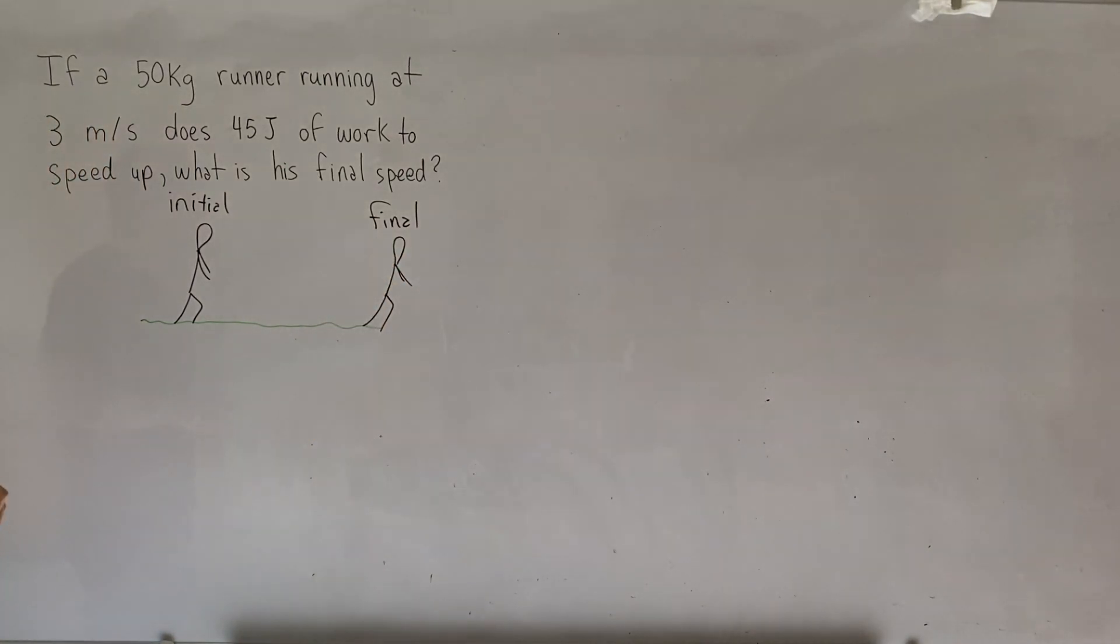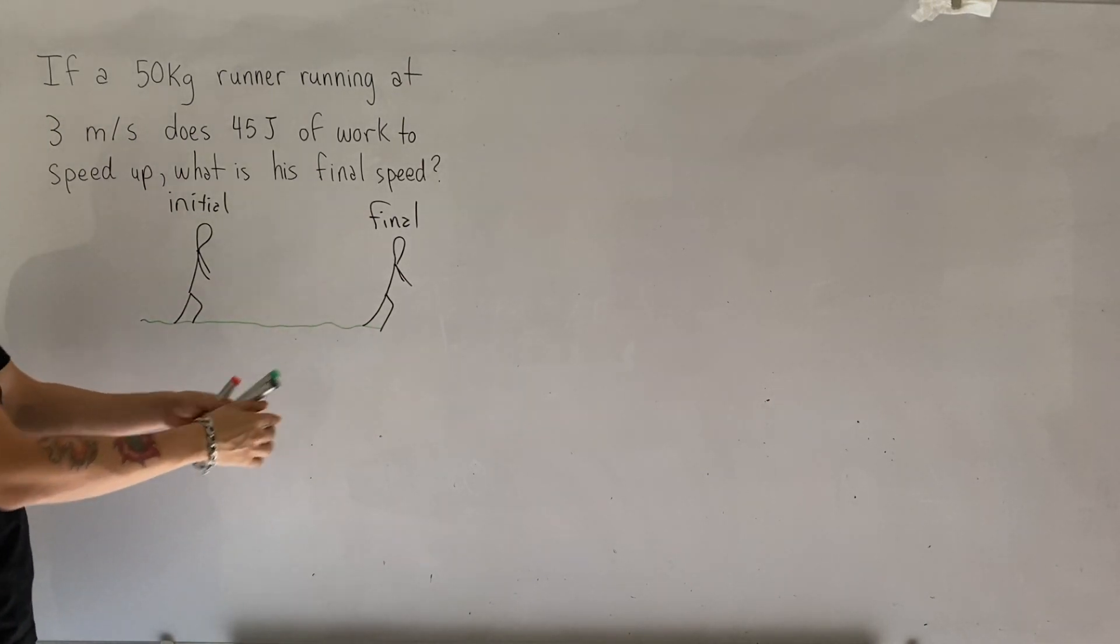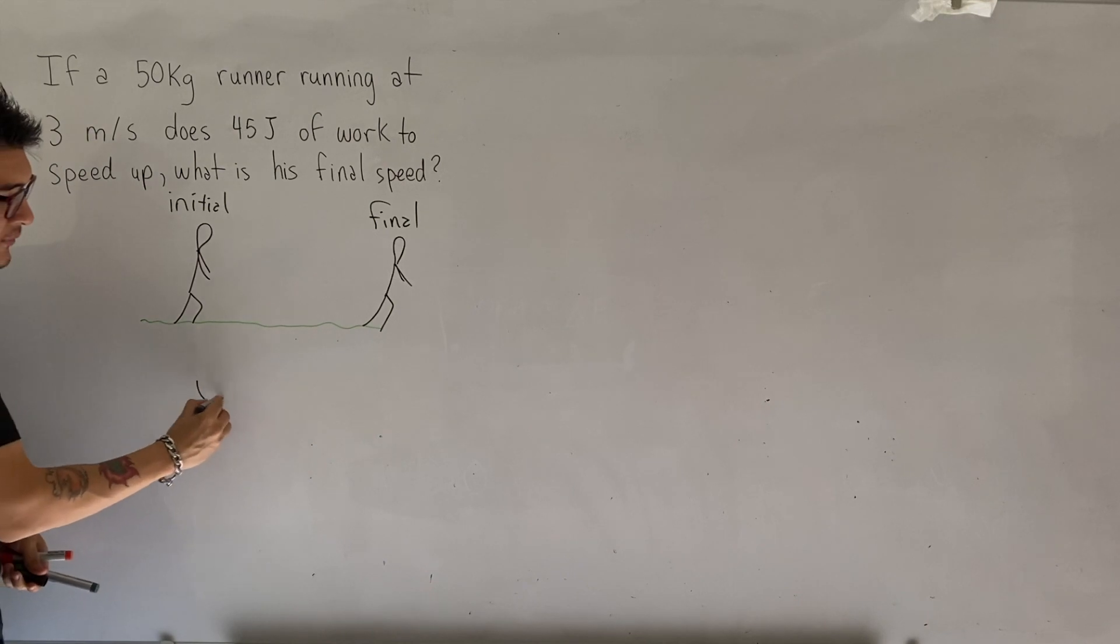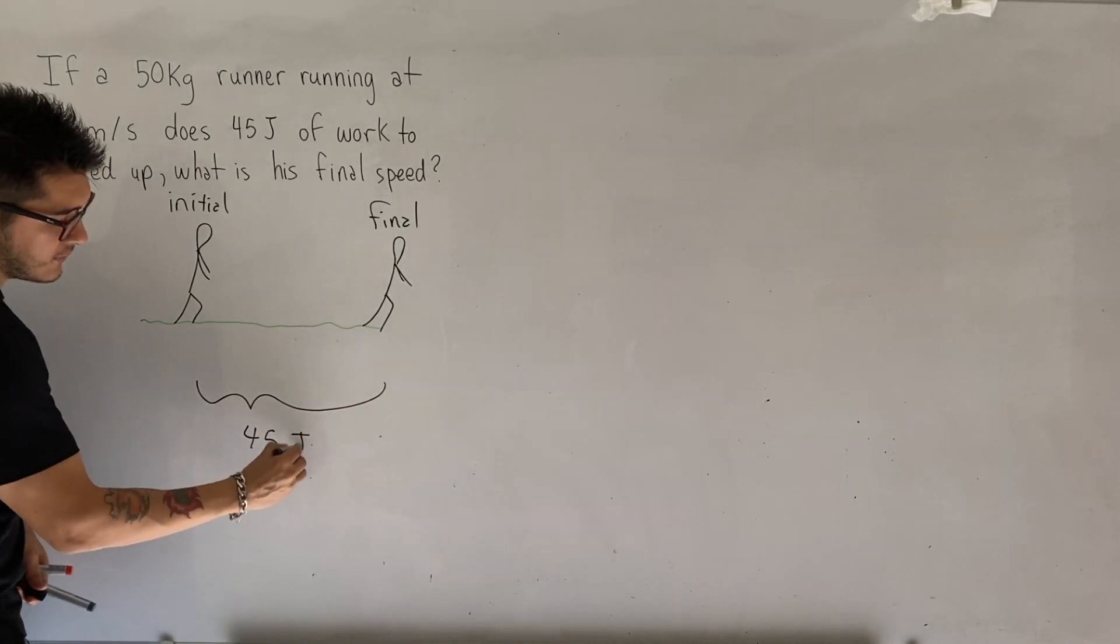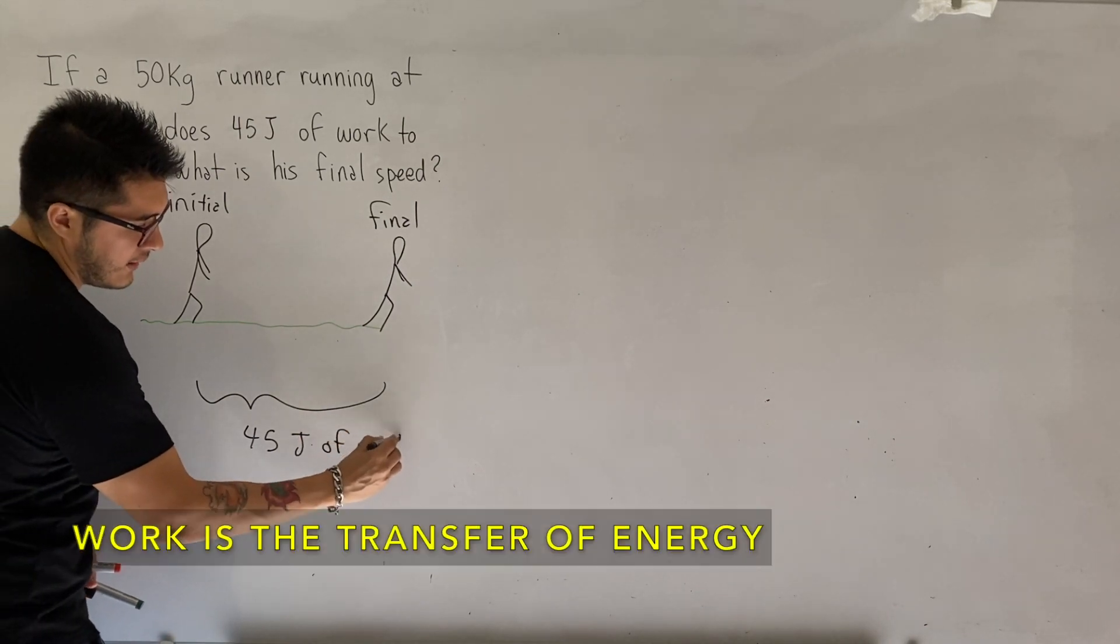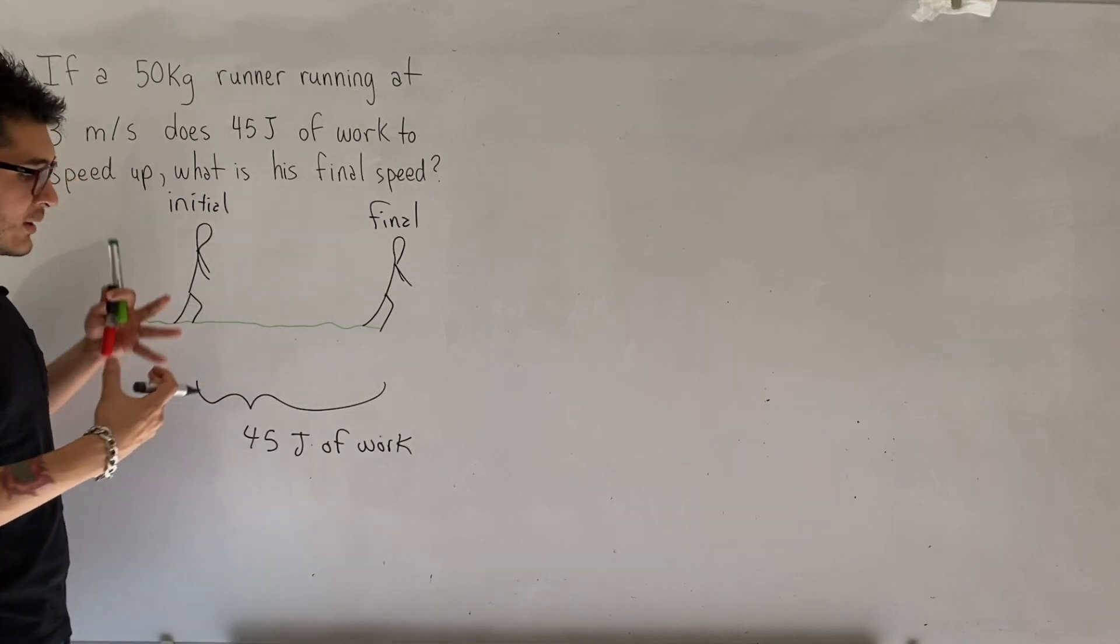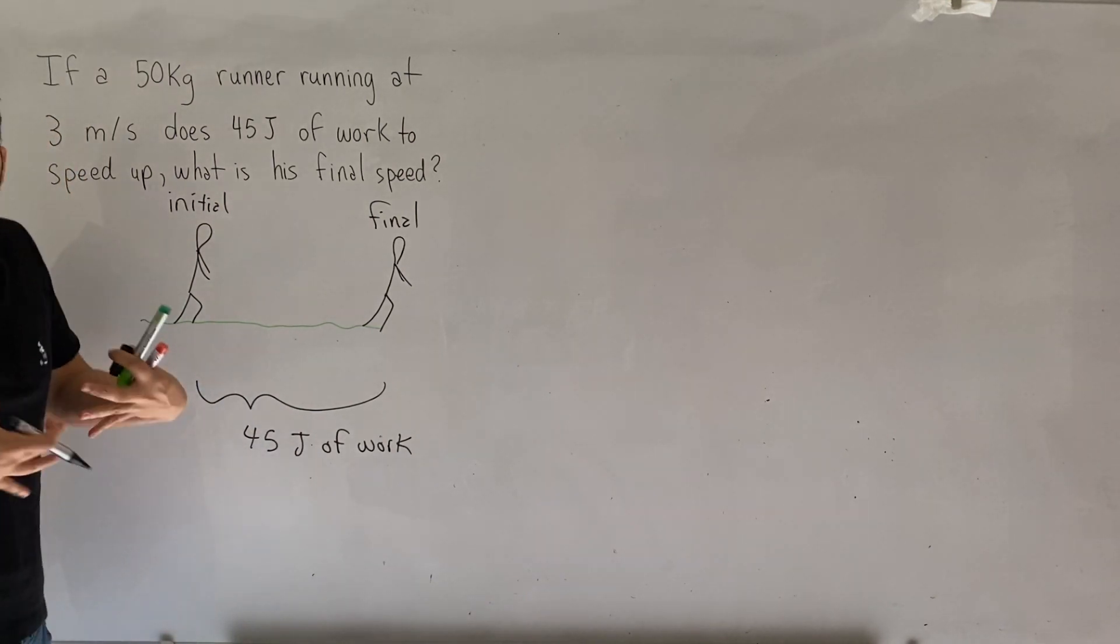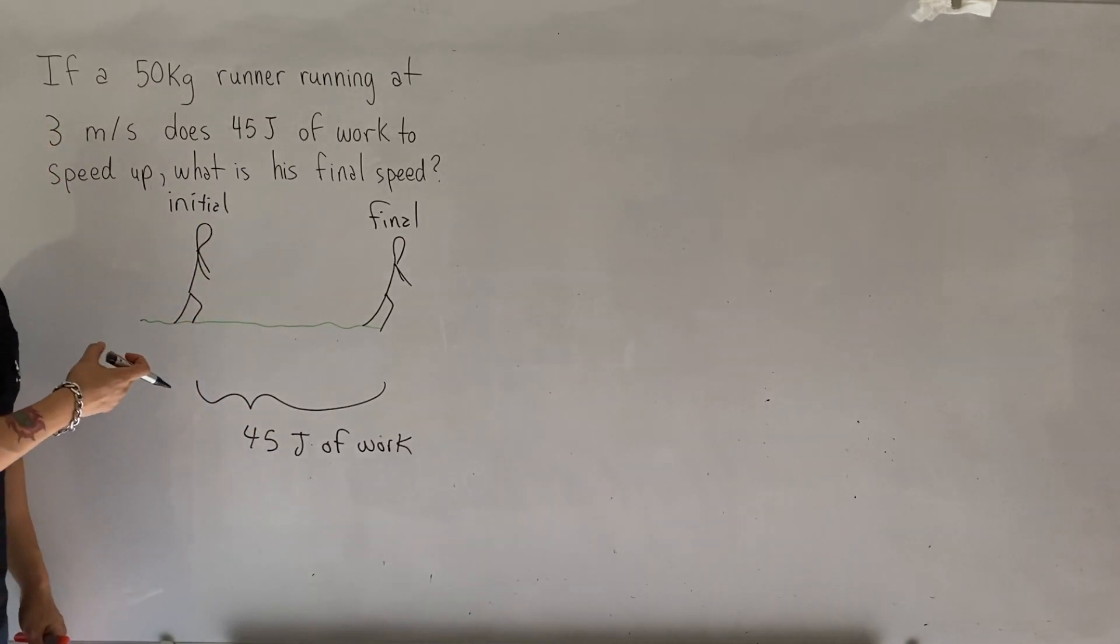Now during this change from the initial to final, the runner did 45 joules of work from going from the initial phase to the final phase. So during this phase, 45 joules of work were done. And again, what was work? Work was the transfer of energy. So the runner had to transfer 45 joules, maybe chemical energy from the muscles, into moving energy, which is called kinetic energy.